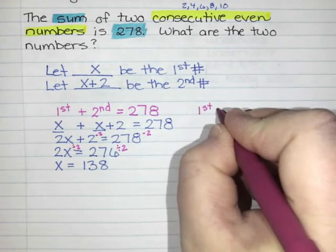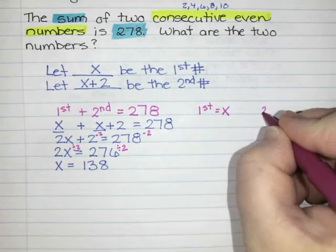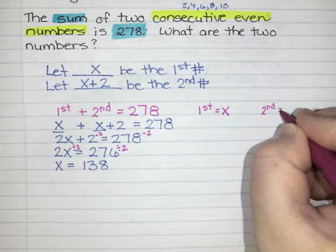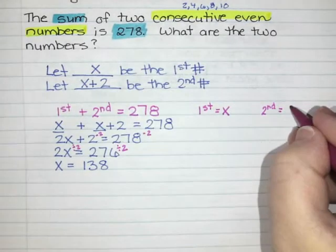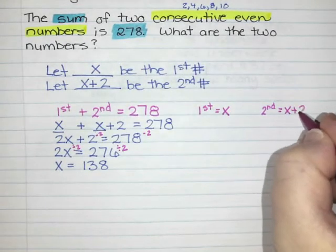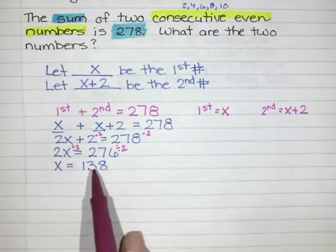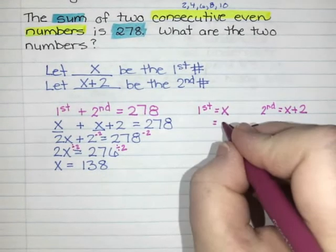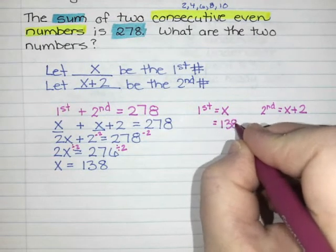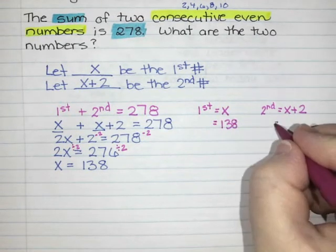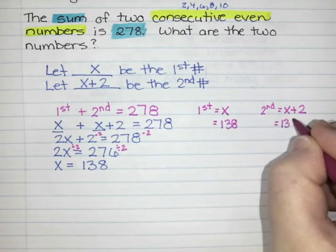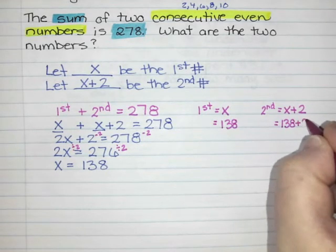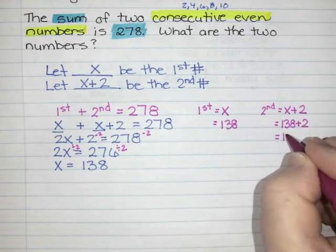We said the first number was going to be x, and my second number is going to be x plus 2. Then all I have to do is take x, which we got to be 138, and substitute it in. So the first number is just x, so it's 138. My second number is x, 138, plus 2, which would give me 140.